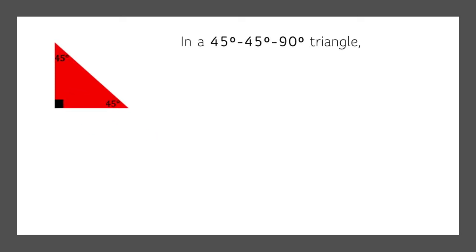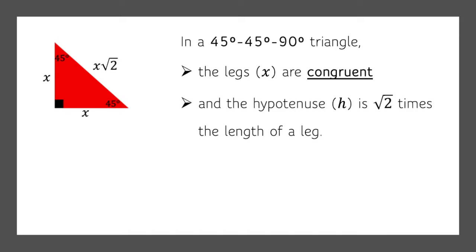Let's take the 45-45-90 triangle first. In a 45-45-90 triangle — meaning two of the angles are 45 degrees and, of course, the 90-degree angle — we know that the legs x are congruent, and the hypotenuse h is root 2 times the length of the leg.